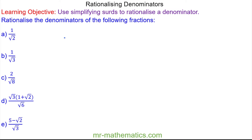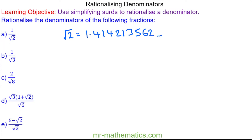If we looked at the square root of 2 and we wrote this as a decimal we get 1.414213562, and if our calculator display was long enough we would see that this decimal would never terminate and it would never repeat. So because of this, the square root of 2 is an irrational number.